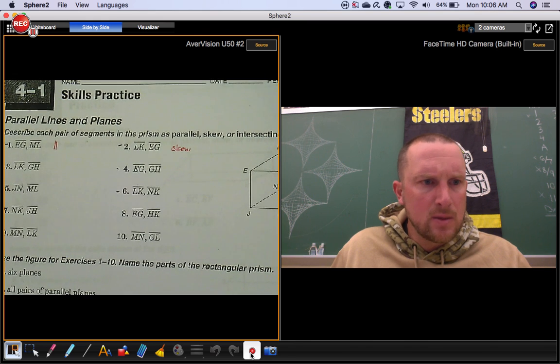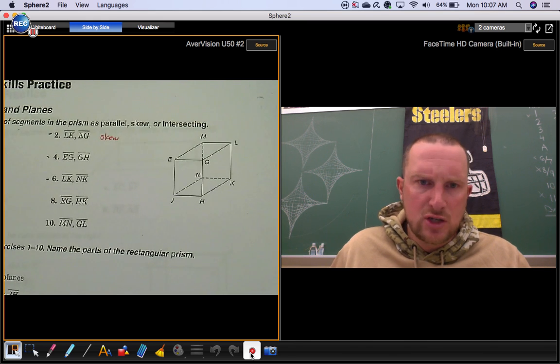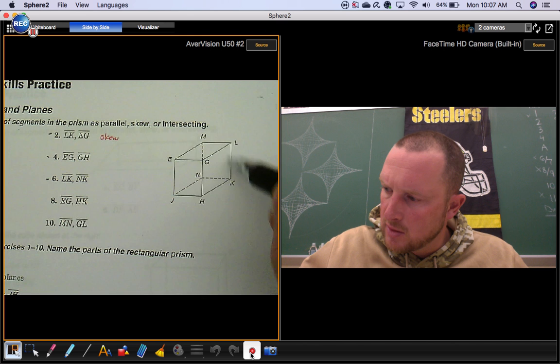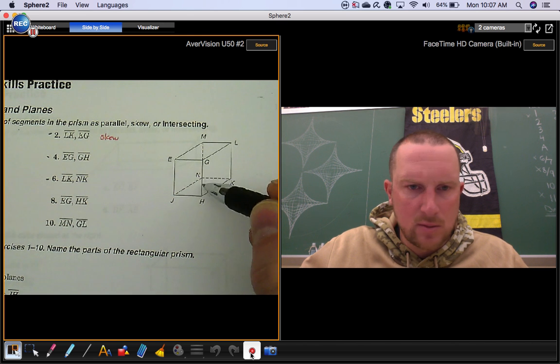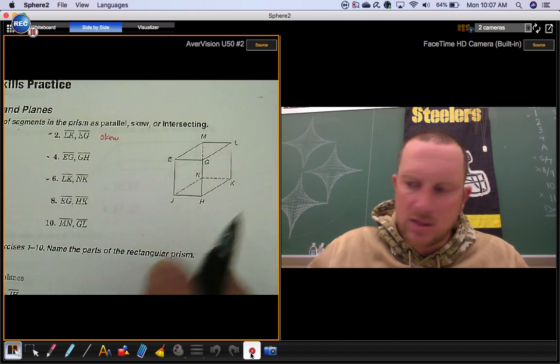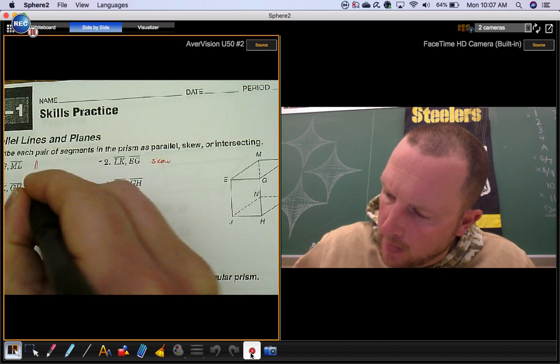Number three, segment LK and segment GH. There's segment LK. There's segment GH. They're both on this right side wall. They don't touch each other. That's parallel again.